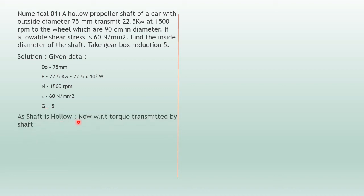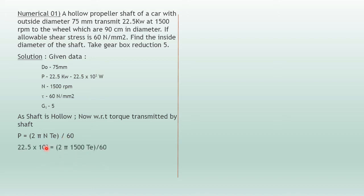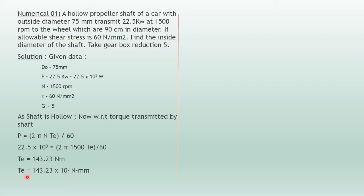Since the shaft is hollow, the torque transmitted by the shaft uses the formula P = 2πNT/60, where T is the torque transmitted by the engine. Substituting all values and solving this equation, you get the engine torque Te as 143.23 N·m. We convert this to N·mm by multiplying by 10³, giving Te = 143.23 × 10³ N·mm.